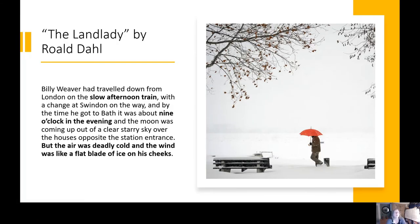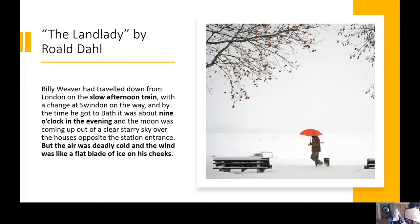Our example of tone is from 'The Landlady' by Roald Dahl. As we think about how it sets the tone: we have a slow afternoon train, and by the time the character got there it was nine o'clock in the evening — it's already dark. The moon was coming up out of a clear starry sky, so it's not even fully out yet. And now we have 'deadly cold' wind and air like a 'flat blade of ice on his cheeks.' Some of you might think that's description — and you're right. Here's where foreshadowing gets messy: the techniques can overlap. It can be more than one type. Roald Dahl is using tone to benefit the description he's writing in the first paragraph, and they are both foreshadowing plants.